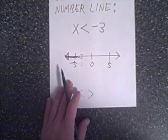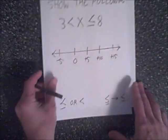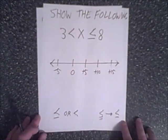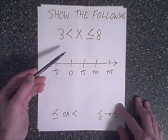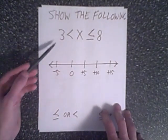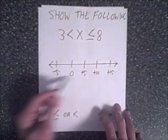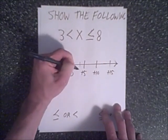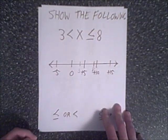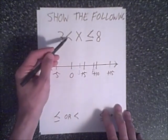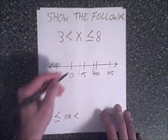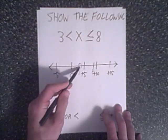The second example is 3 < x ≤ 8. This example has both a less than and a less than or equal to, to show the difference between the two. You take your two points and find them on the number line. Positive 3 is here, and 8 is further to the right. The less than means x cannot equal 3, so we leave an open circle at 3, indicating 3 is not one of the solutions.